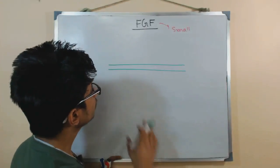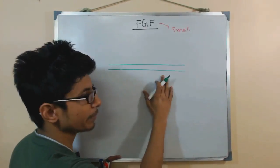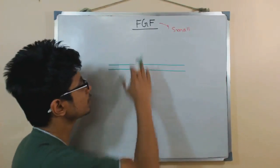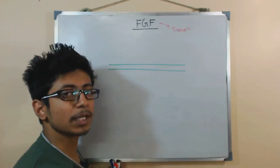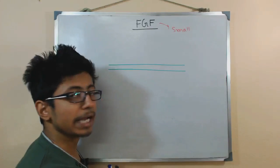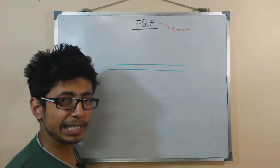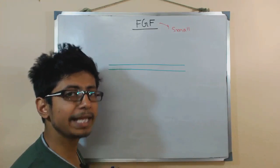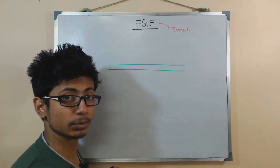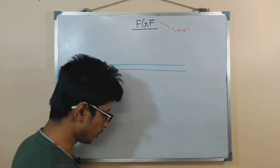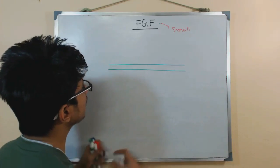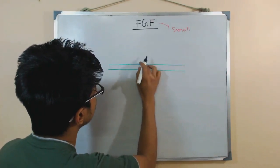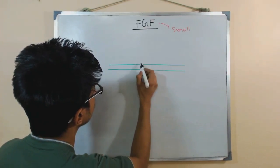If you look at the signaling process, this is the cell membrane and there should be a receptor for the protein because fibroblast growth factor, just like the epidermal growth factor, is a kind of ligand. It requires a receptor for relaying the signal from outside the cell to inside the cell. There are responsible elements present in the cell membrane — the receptor.